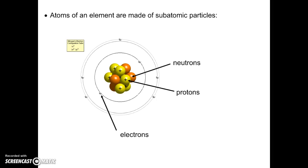We know that all atoms contain subatomic particles. They all have protons which have a positive charge and electrons which have a negative charge and neutrons which are neutral.